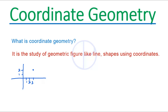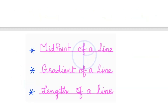Suppose I mark this dot as A. This is represented as 3 comma 2. The 3 represents the x-axis value and this 2 represents the y-axis value. So in coordinate form, this point A is represented as (3, 2). By using two points you can find the midpoint of a line, the gradient of a line, and the length of a line.